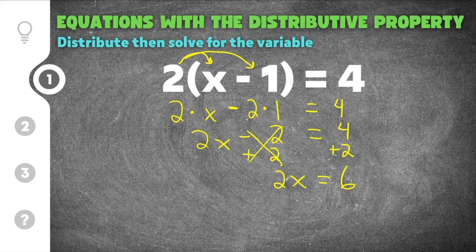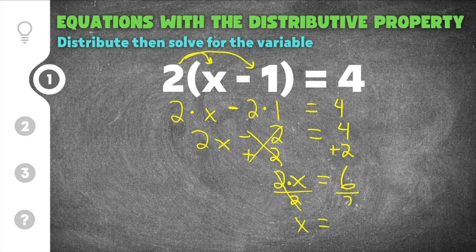The coefficient on 2x is 2 — this is like saying 2 times x. The opposite of multiplying by 2 is to divide by 2, so the 2s cancel and we have just x. We also divide the other side by 2 to keep the equation in balance. 6 divided by 2 is 3, so the solution is x equals 3.